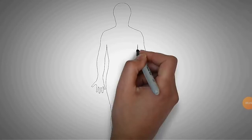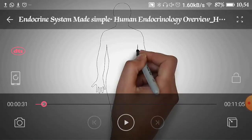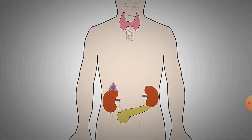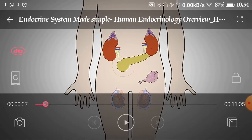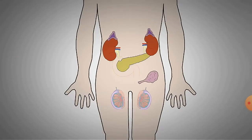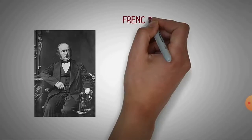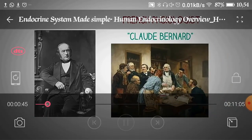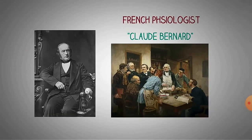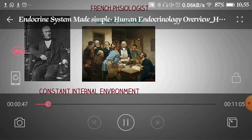Good morning students. Today we are having the overview of endocrine glands, in which we will discuss the various hormones secreted from various organs. The human body has various organs like kidneys, adrenal glands, pancreas, and gonads — female gonads like ovaries and male gonads like testes. There was one scientist named Claude Bernard, a French physiologist, who brought the concept of internal physiology, that is homeostasis, for the first time.